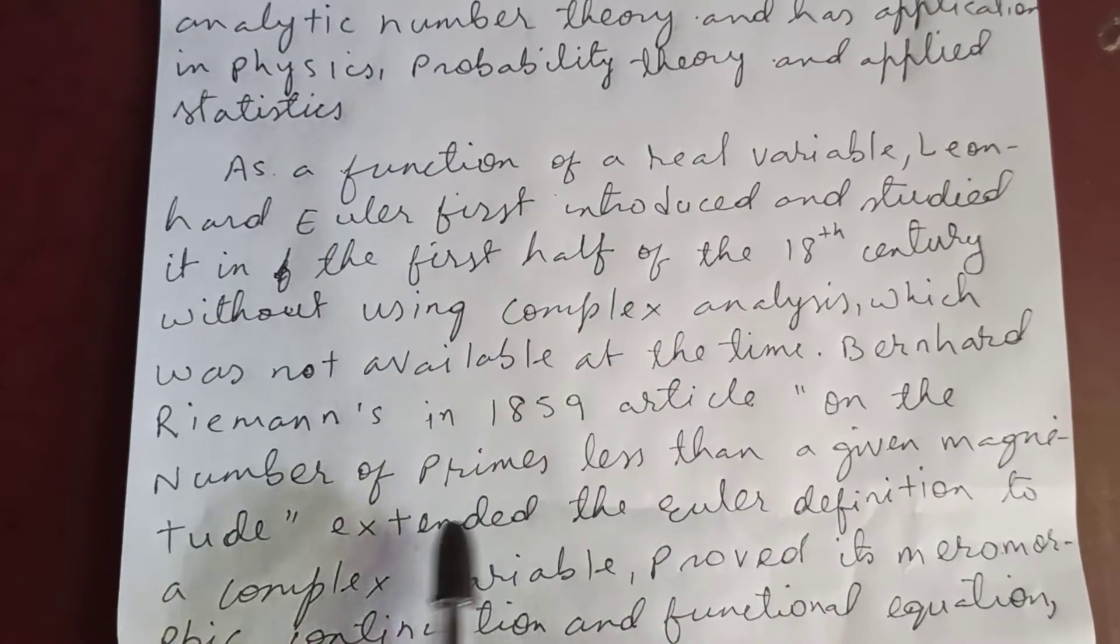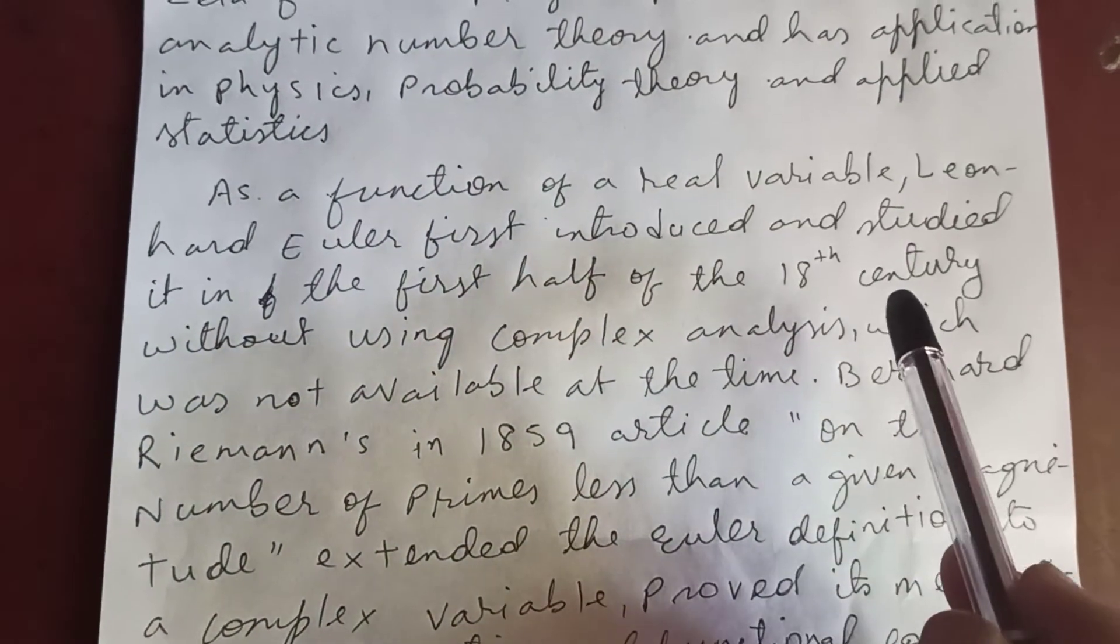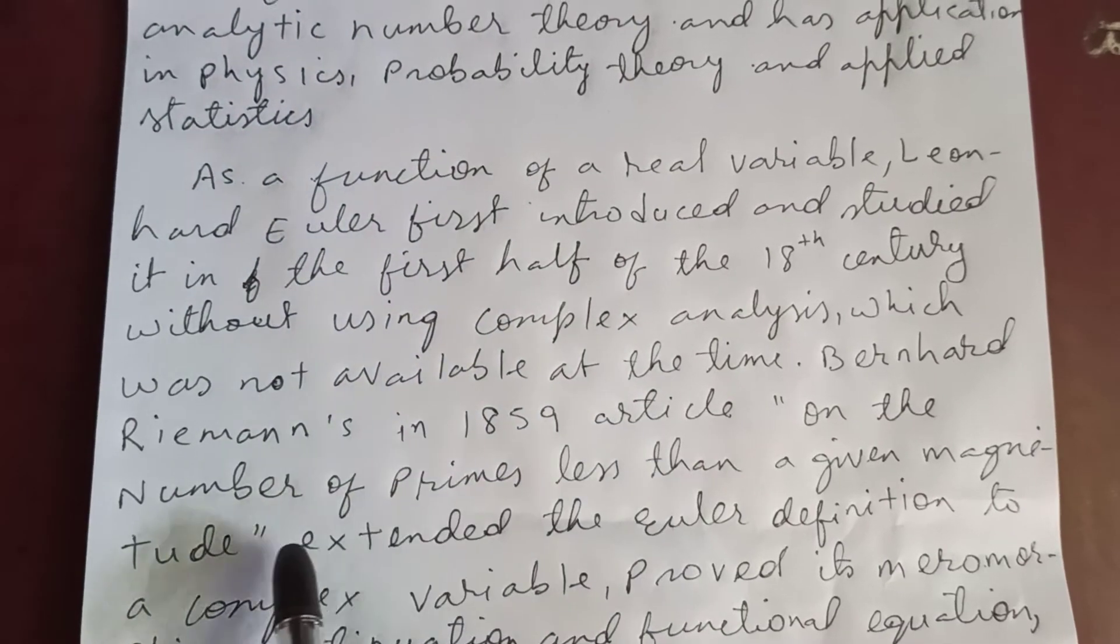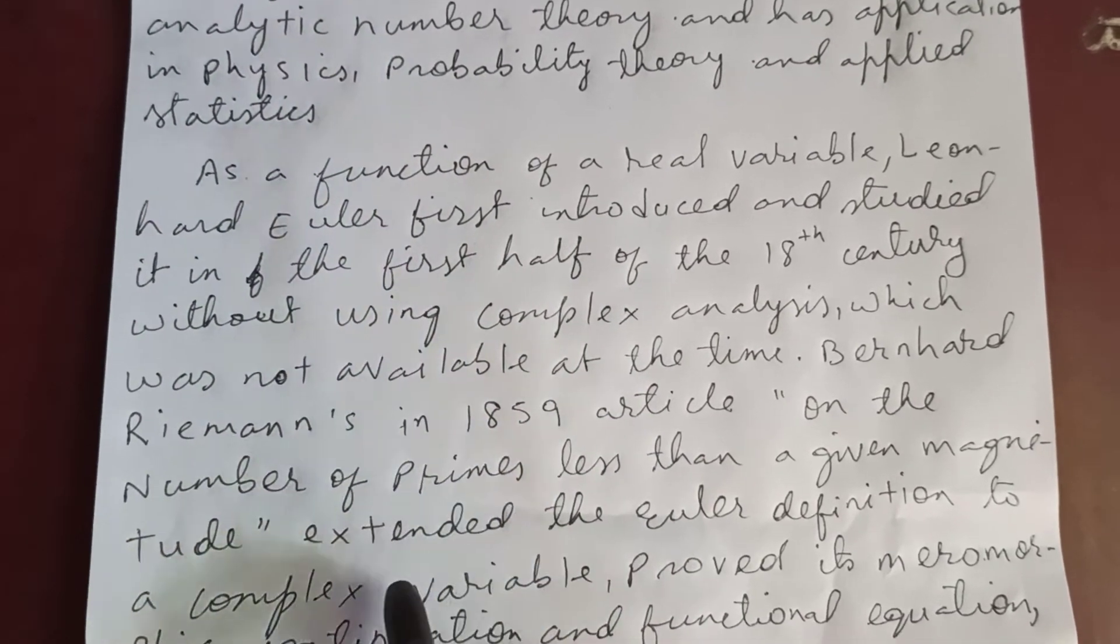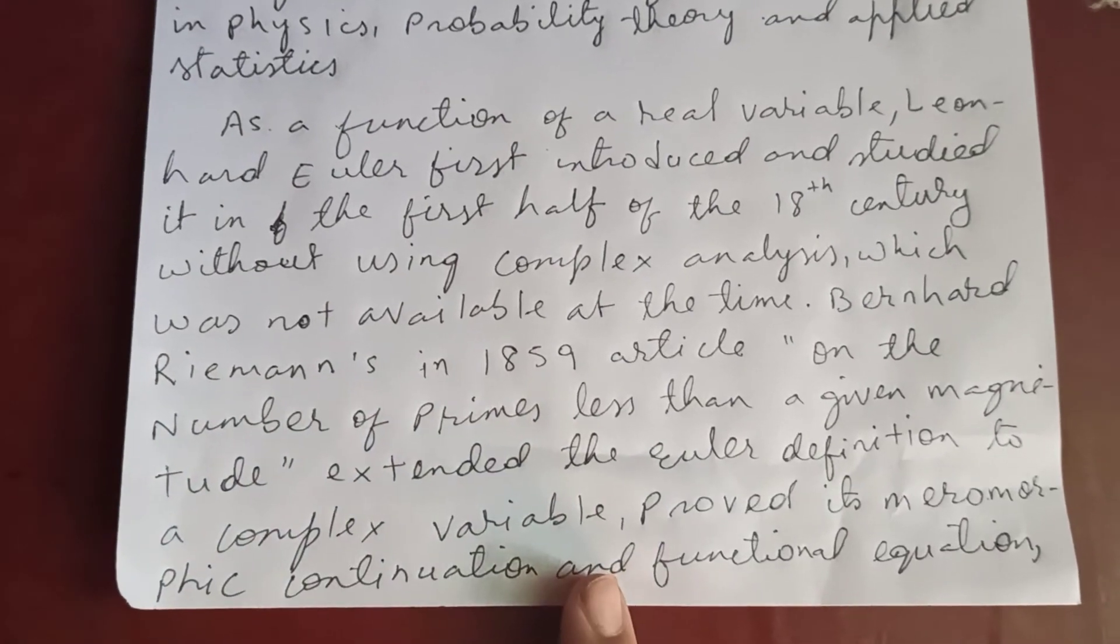Bernhard Riemann in 1859, in his article on the number of primes less than a given magnitude, extended the Euler definition to a complex variable and proved its meromorphic continuation and functional equation.